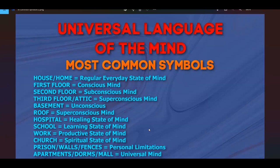The last symbols here: apartments, dorms, and malls represent the universal mind. These are all places made up of lots of individual units that come together to form one body — a mall has individual stores, apartments and dorms have individual living units. The suffix '-ment' means mind, so 'apart-ment' literally means each part of the mind — the different parts that make up the universal mind.